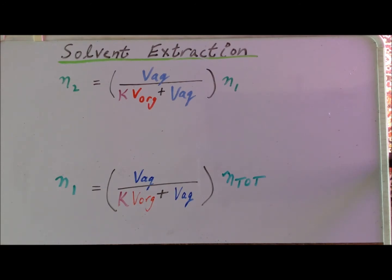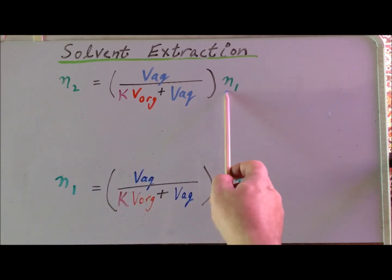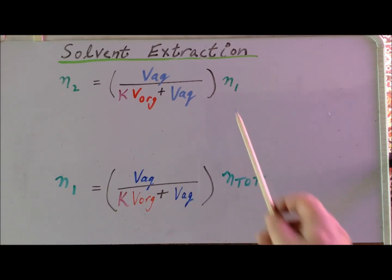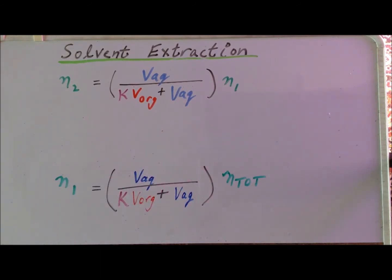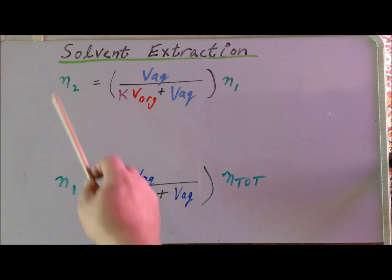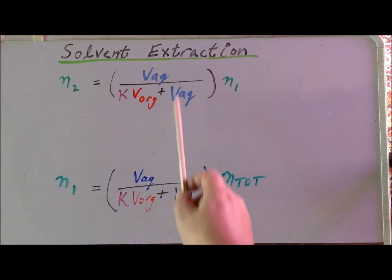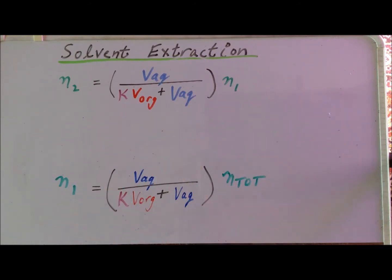Now, let's assume that we use the exact same volume of organic solvent to do a second extraction. By the reasoning that we used to derive the first formula, we now have this expression where N1 is the number of moles of the solute in the aqueous phase that we start with after one extraction, and the amount remaining after the second extraction is N2. We see we have an expression very similar to the one we had before.